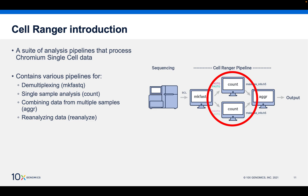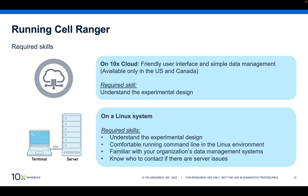In our analysis today, we are focusing on the Count program within CellRanger. To run the different pipelines of CellRanger — and CellRanger Count specifically — you have a couple of options. You can use the 10x cloud analysis platform, which requires you to understand the experimental design so you can set your parameters accordingly. You can also use a Linux server or high-performance cluster. Using a Linux server will require understanding your experimental design, as well as a certain level of comfort working in a Linux environment and using the command line. It also helps to be familiar with your organization's data management system and to know who to contact if you run into issues.